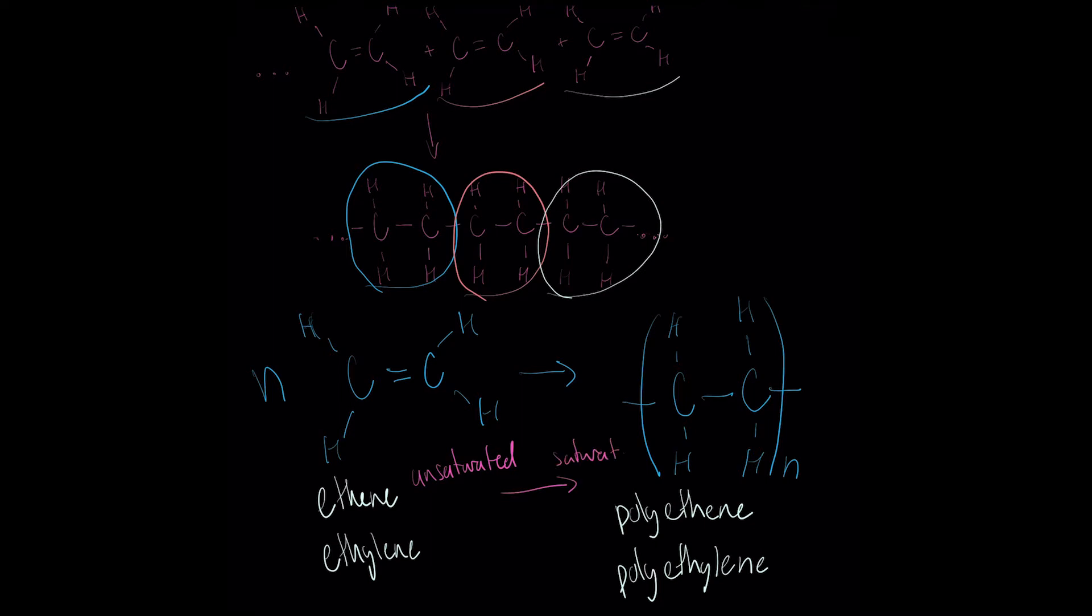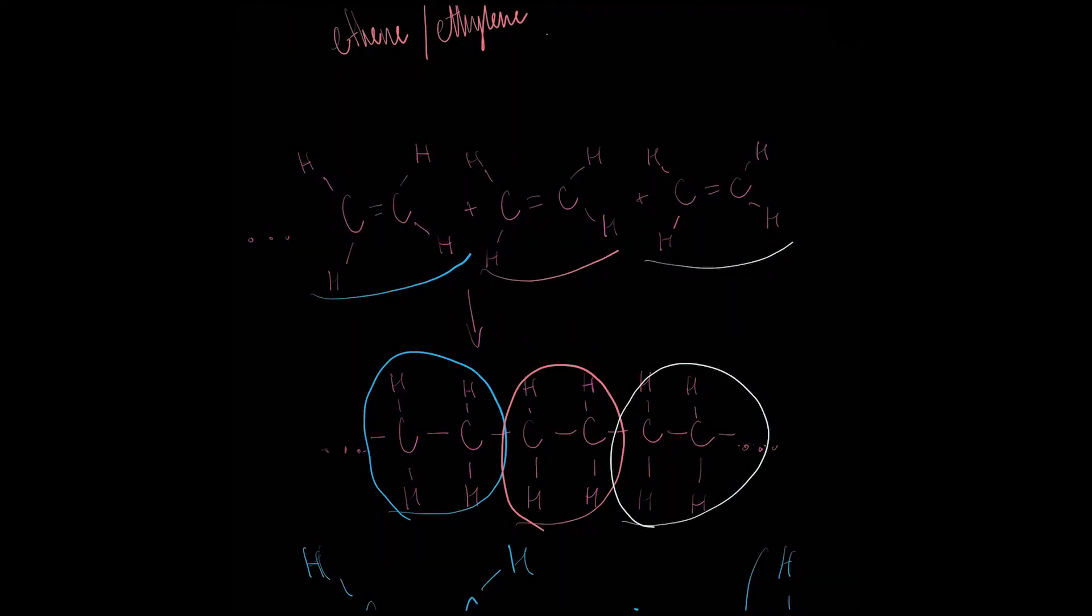In summary, addition polymerization takes an unsaturated molecule like ethene or propene and initiates a chain reaction to join thousands of these molecules together.